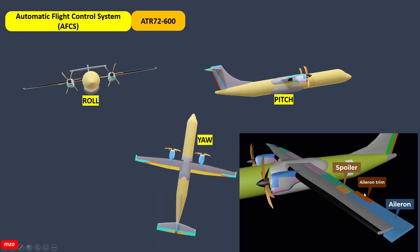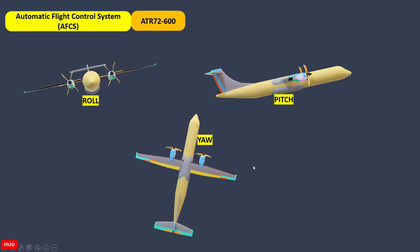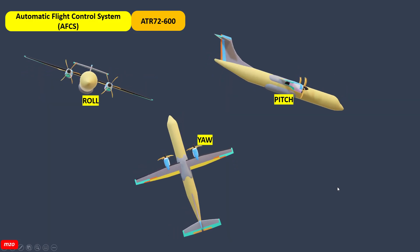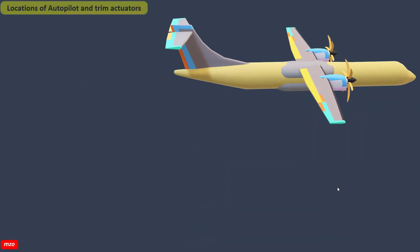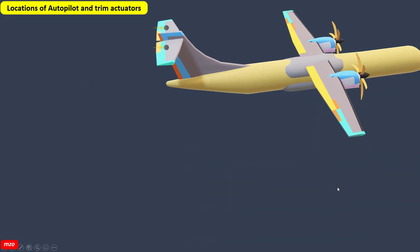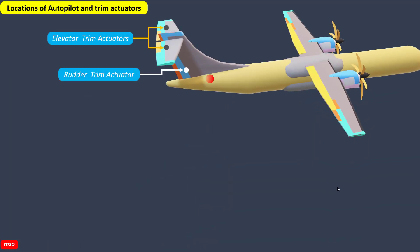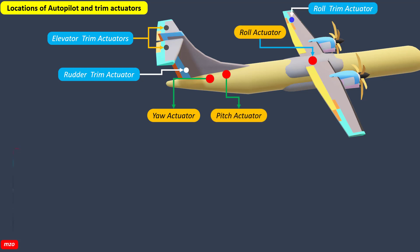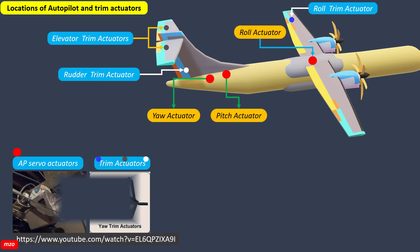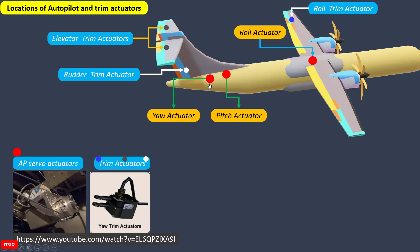Aileron trim is not automatically controlled. These are the locations of the AutoPilot trim actuator and AutoPilot actuator, and aileron trim actuator. You see the root circuit here. This is the yaw actuator location, pitch actuator, and then roll actuator.